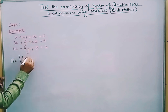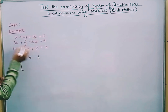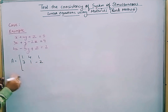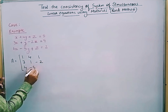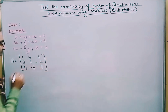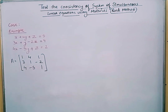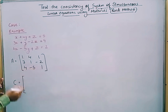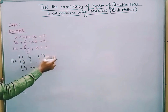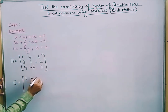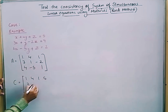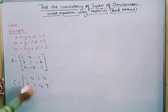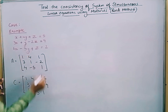Matrix A has entries: first row 1, 4, 1; from the second equation, 3, 1, −2; and for the third equation, 4, −5, 1. We also write the augmented matrix C by taking the coefficient matrix and adding one more column for the constants: rows are [1, 4, 1 | 5], [3, 1, −2 | 9], and [4, −5, 1 | 2].